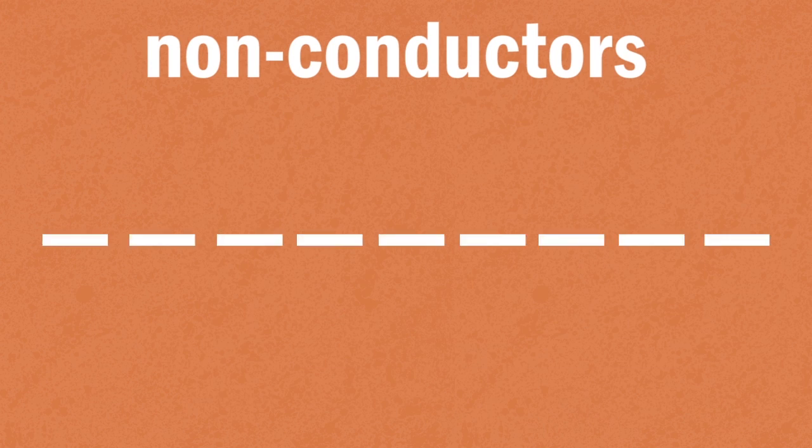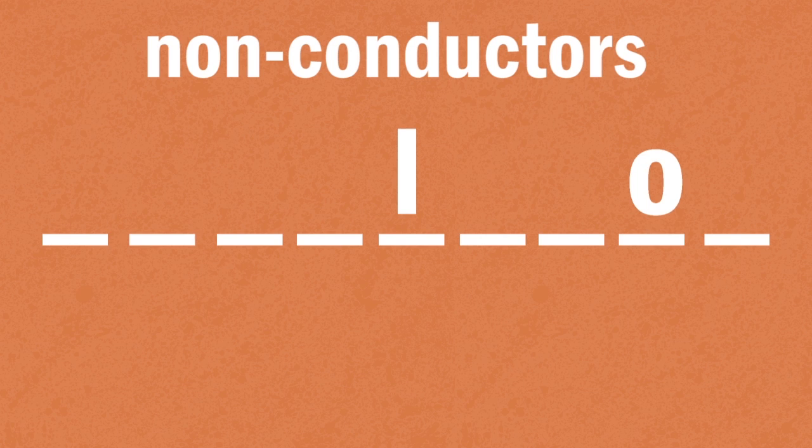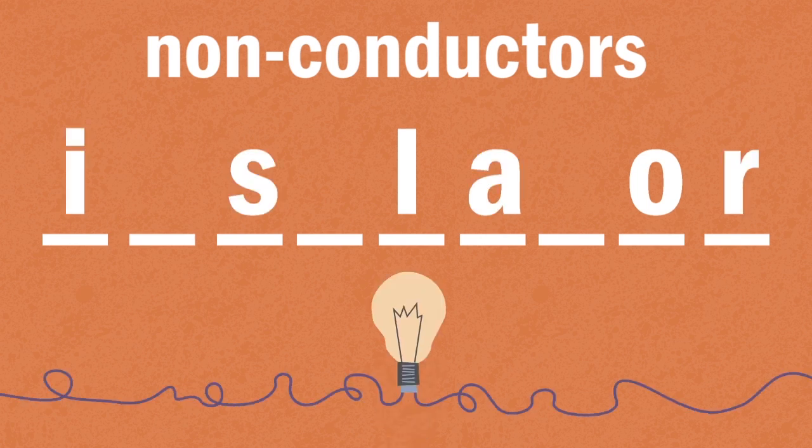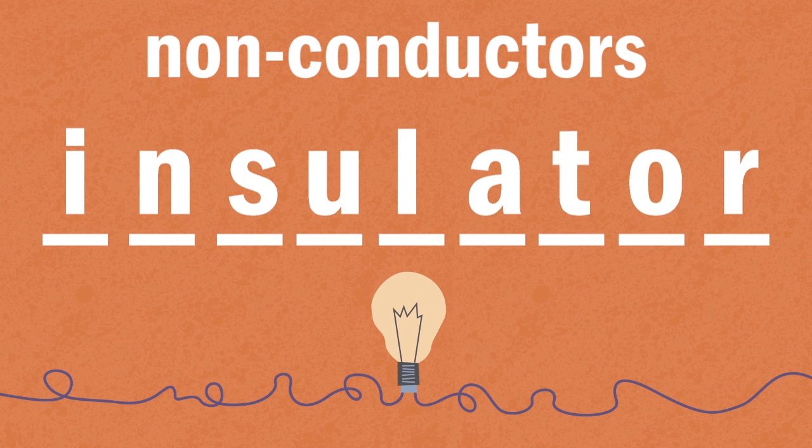What is the other term used to describe a non-conductor? The correct answer to describe substances that do not readily conduct heat or electricity is an insulator. Did you get it right?